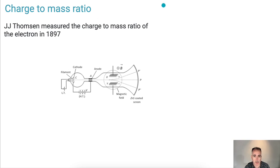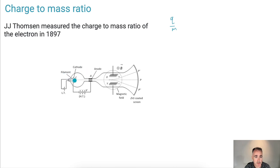What charge-to-mass ratio really means is Q over M. Later on, once Millikan came around and they figured out Q, they could figure out M — the mass. The idea was actually fairly straightforward: use a cathode ray tube to accelerate electrons across a potential difference. There's a potential difference here that's accelerating these electrons.